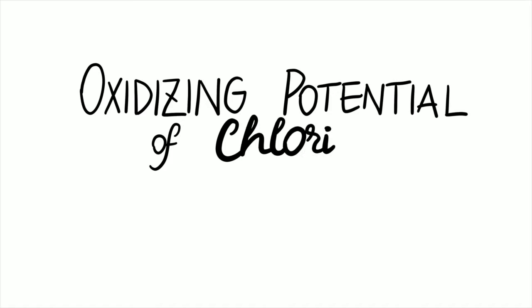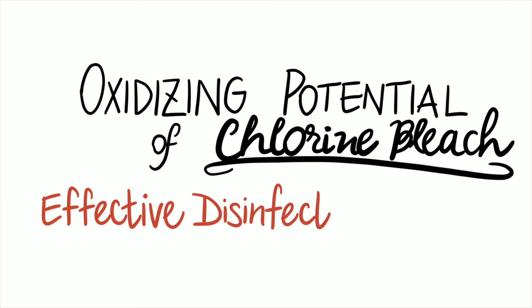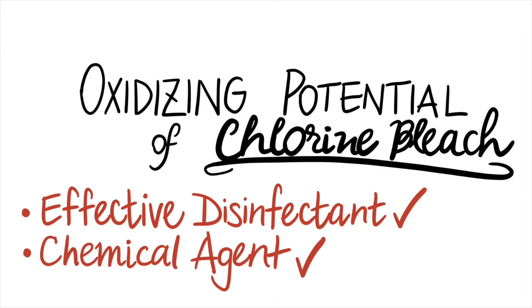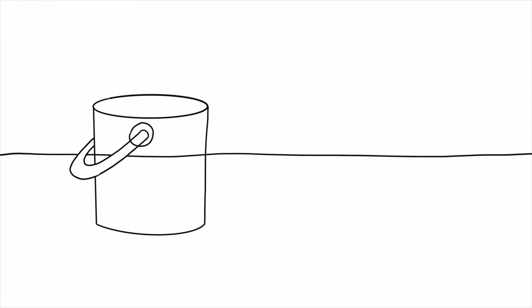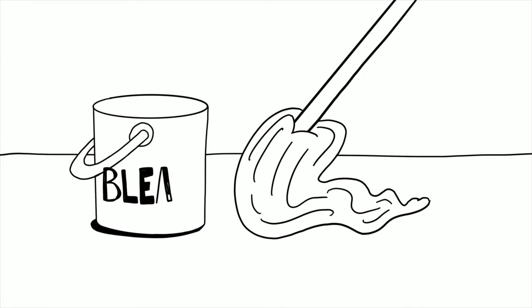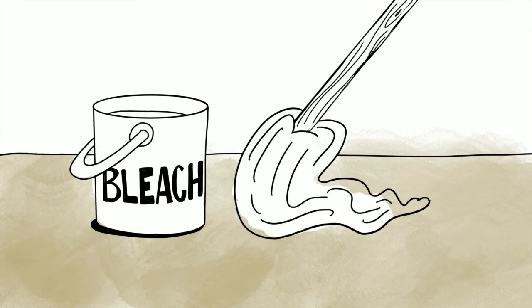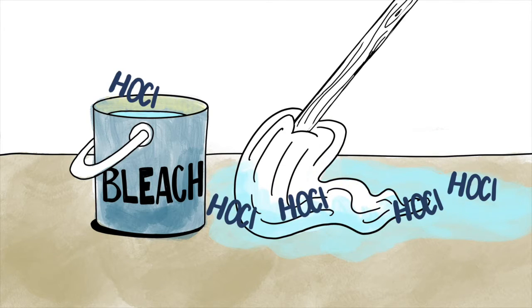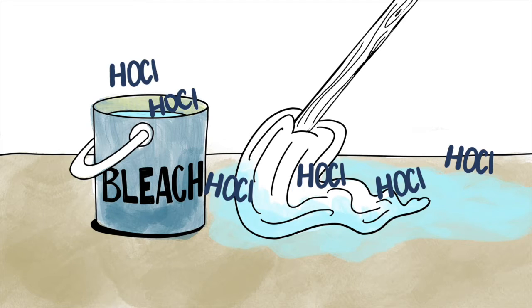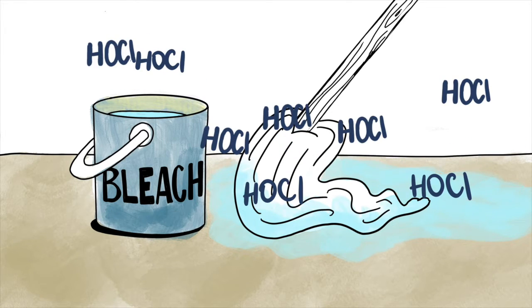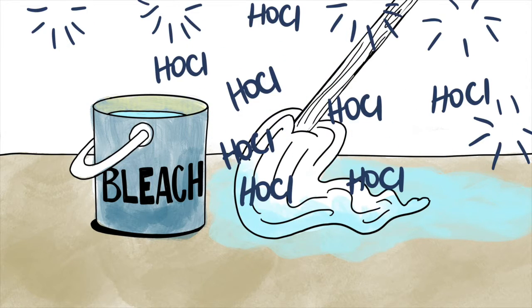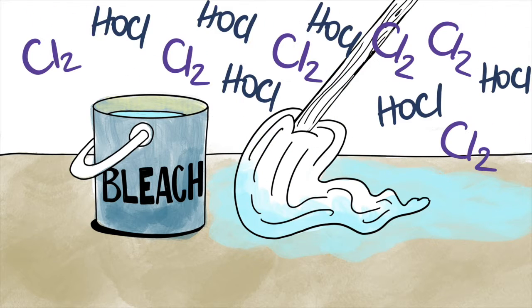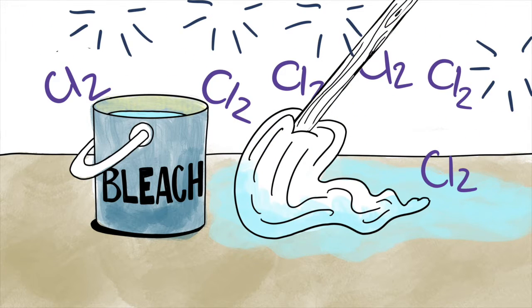The same oxidizing potential that makes chlorine bleach such an effective disinfectant also makes it a powerful chemical agent in the environment, including the indoor environment of your own home. When you apply a bleach solution in water to your floor or to a surface, the hypochlorous acid can volatilize and move from the water solution to the gas phase in the air. Once in the air, hypochlorous acid can react and oxidize with the tissues of your lungs, but it can also react with indoor surfaces to form the quite toxic molecular chlorine gas, Cl2.